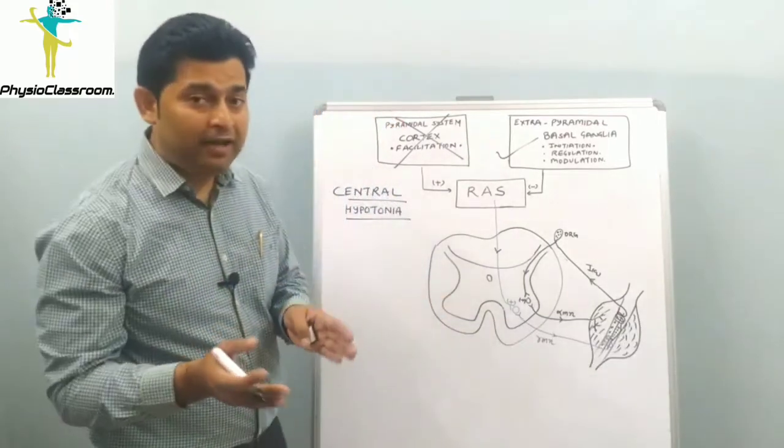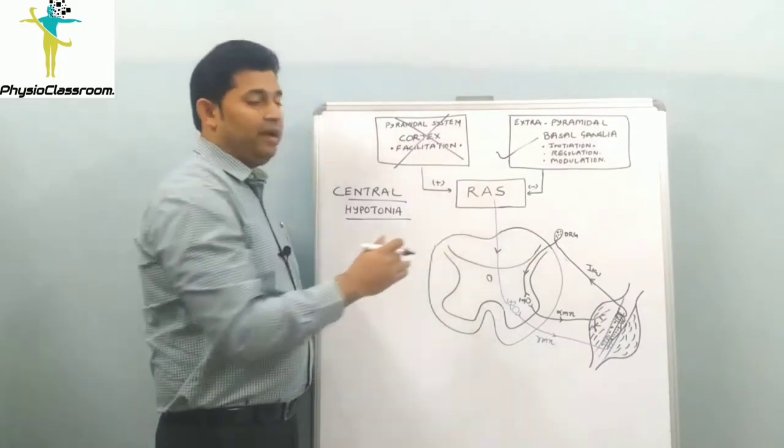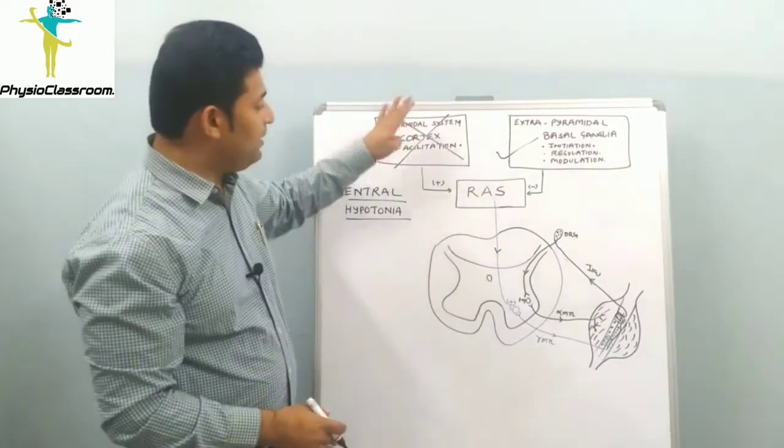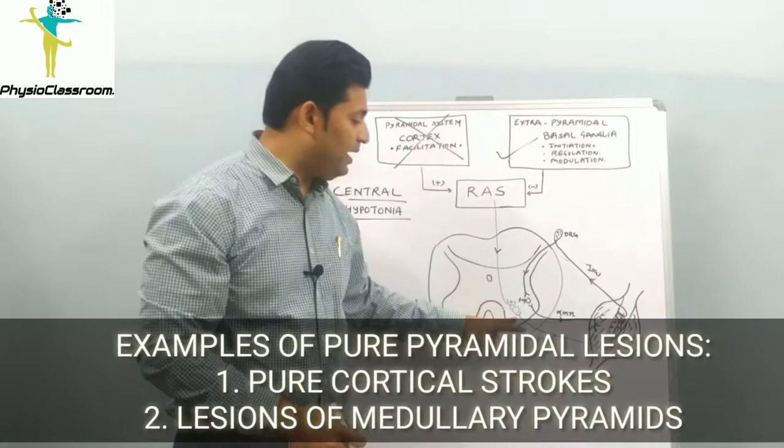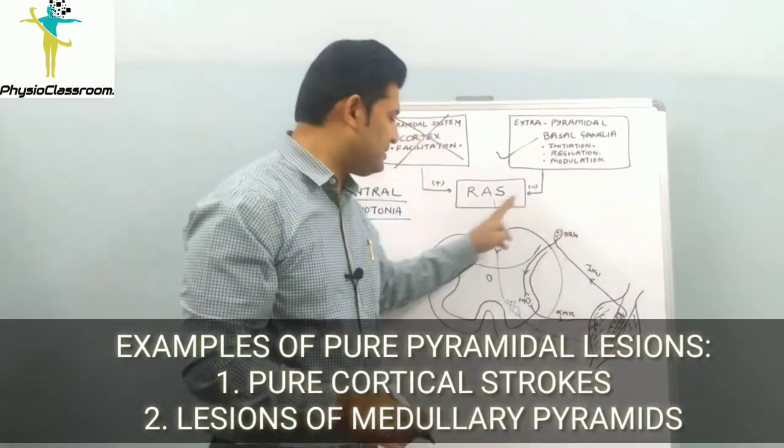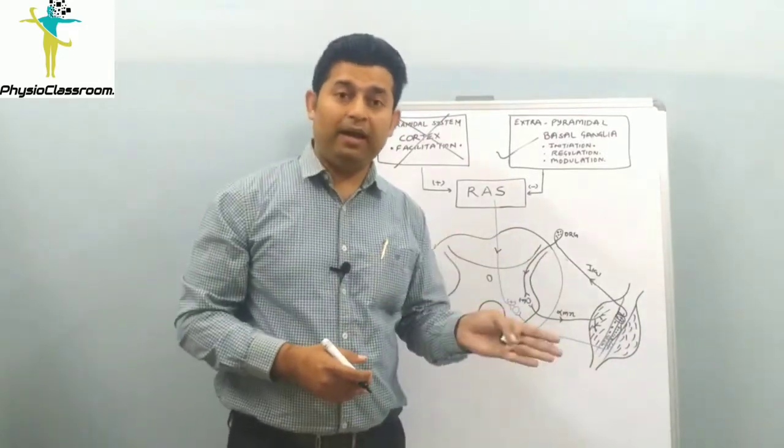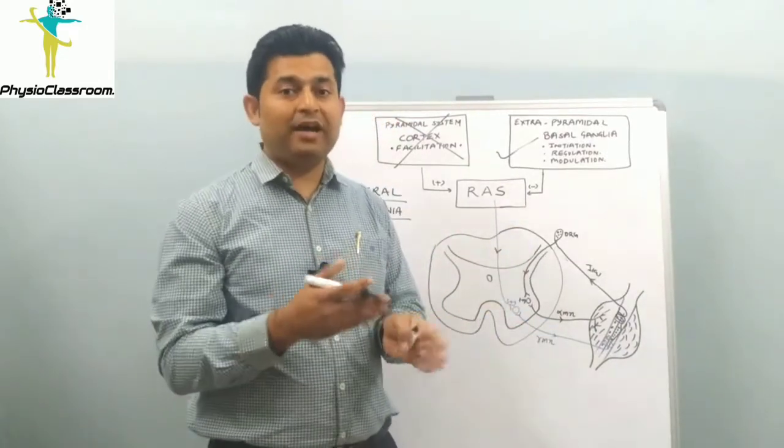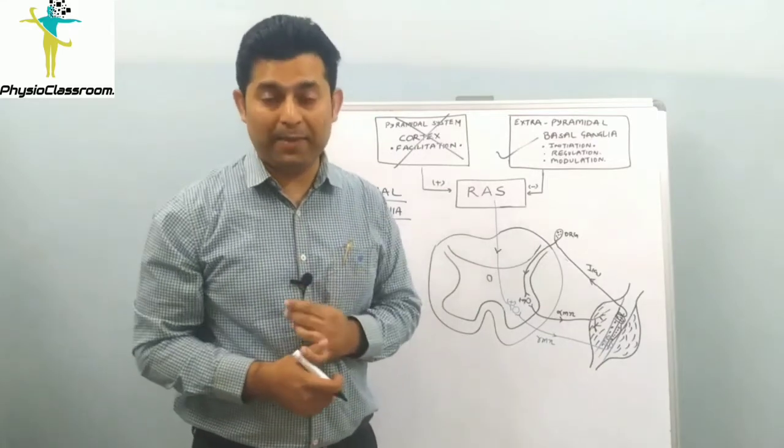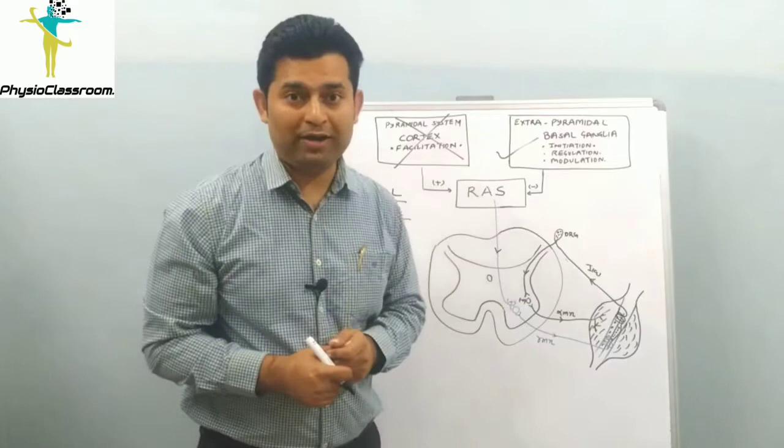Keep in mind, because of over-inhibition of the reticular activating system in pure pyramidal lesion, there is a lack of gamma motor neuron firing. This suppresses muscle stretch reflex activity, leading to persistent hypotonia or central hypotonia, which is seen in upper motor neuron lesions.